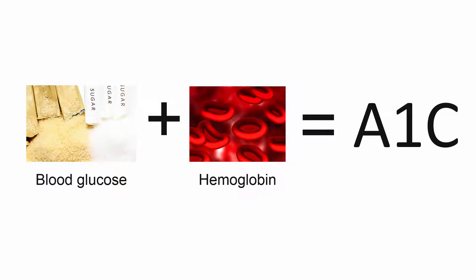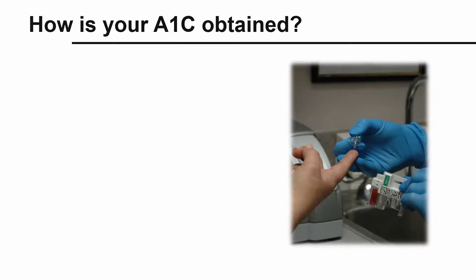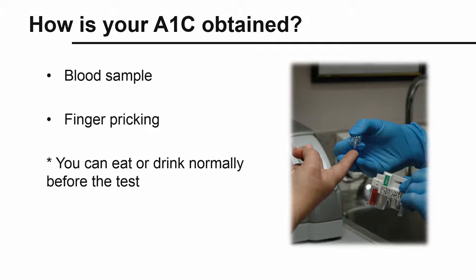Once the glucose binds to the hemoglobin, it remains combined for the lifespan of the red blood cell, which is about 120 days. Your A1c measure is obtained from your blood. Blood is taken from a vein in your arm using a needle, or your finger is pricked using a lancet. The test can be taken any time during the day by your healthcare provider, and you can eat or drink normally before the test.